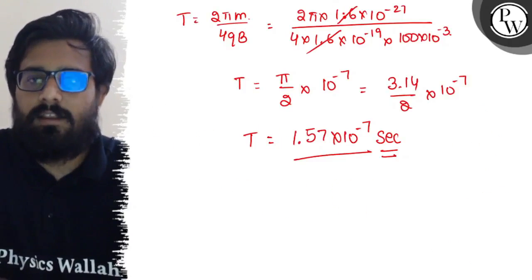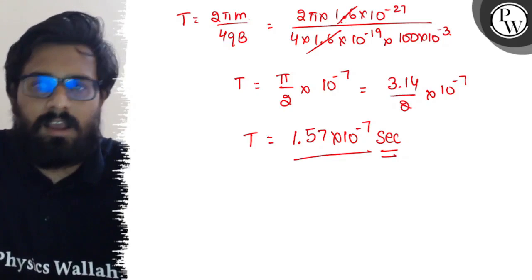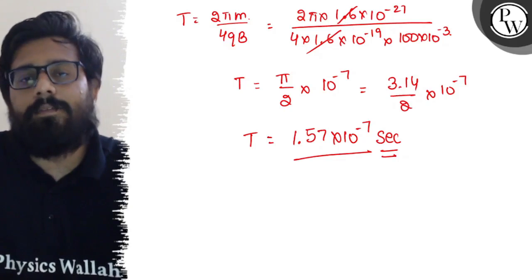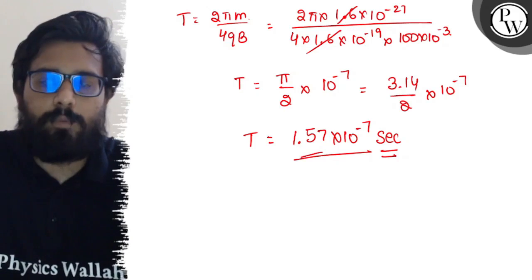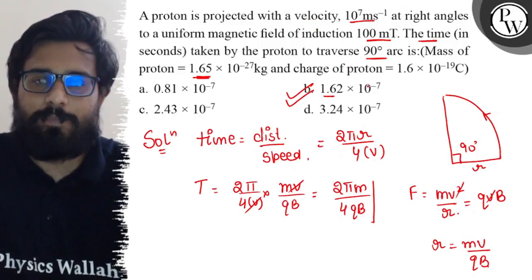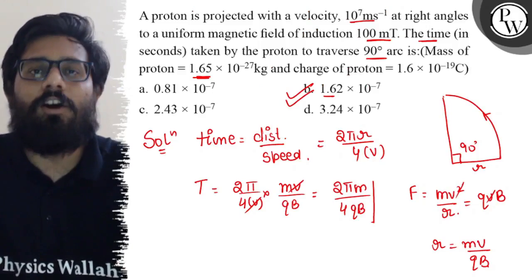As you can see here, mass of the proton is 1.65, but just for the sake of simplicity in calculation, I took 1.6 instead of 1.65, so they easily canceled out. Just because of that there's a variation here. The answer 1.62 × 10^-7 is absolutely correct, so option B is the right answer. I hope you got the concept of this question.